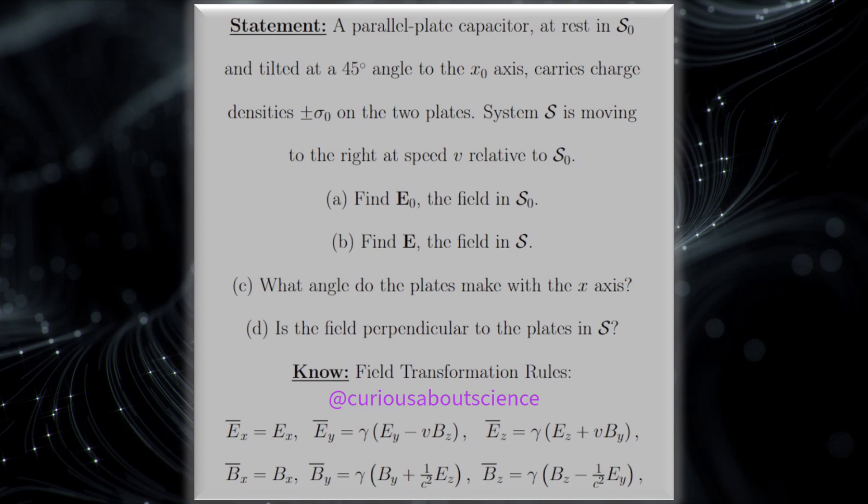Alright, welcome back. Let's get some more work in with these field transformation rules. What we see here is that the statement reads: a parallel plate capacitor at rest in S₀ and tilted at a 45 degree angle to the x₀ axis carries charge densities plus or minus σ₀ on the two plates. System S is moving to the right at speed v relative to S₀.